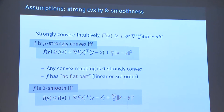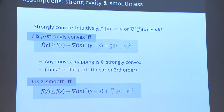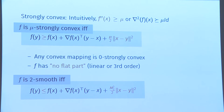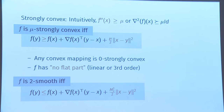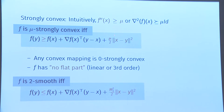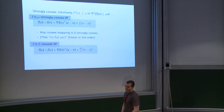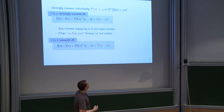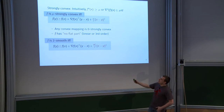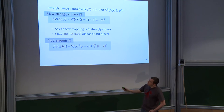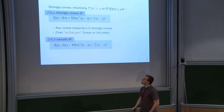An audience member asks why M_2 squared is used instead of just L. The speaker explains it's for homogeneity: on the next slide, instead of 2 there will be something like 3 or 4, so we scale accordingly. The normalization ensures the problem scales correctly with the degree of the polynomial bound.